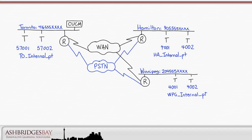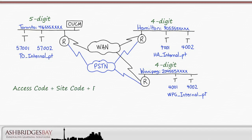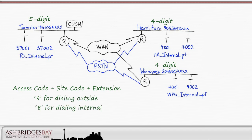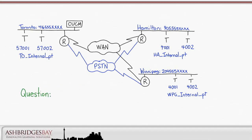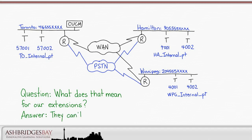Within each of our sites we'll use abbreviated dialing — 5-digit at Toronto, and 4-digit at Hamilton and Winnipeg. To dial between sites, we'll use an access code plus a site code plus the extension at the site, and we'll use a translation pattern to translate to the local number. We reserve 9 as the access code for our external dial plan, and 8 for our internal dial plan. This means extensions can't start with 8 or 9.